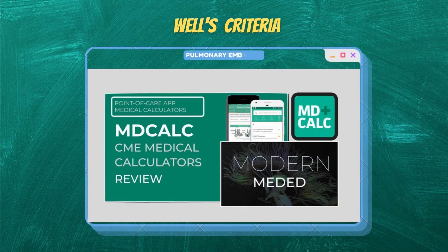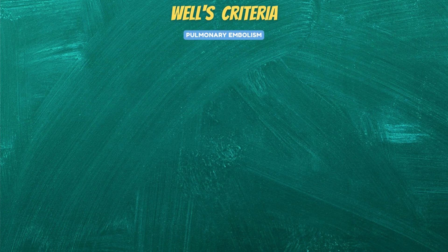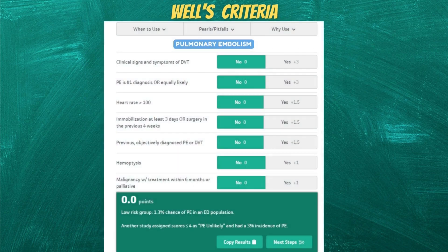It's an amazing calculator by MD Calc, which is an amazing tool website for medical students to calculate any kind of score. Moving on, here we can see that we need to take history to rule out the best probable answer to these seven questions.